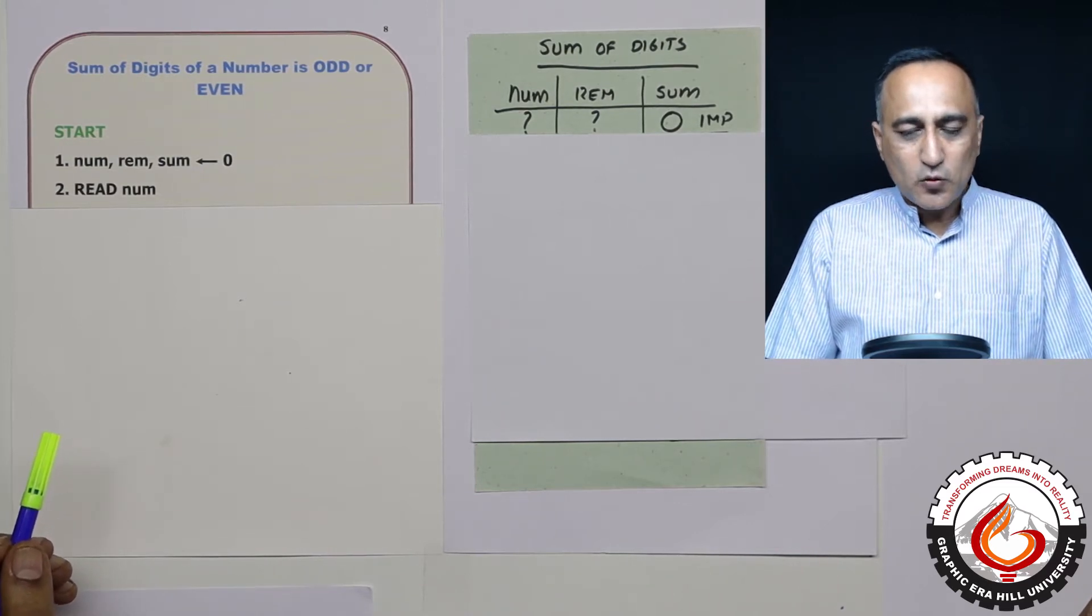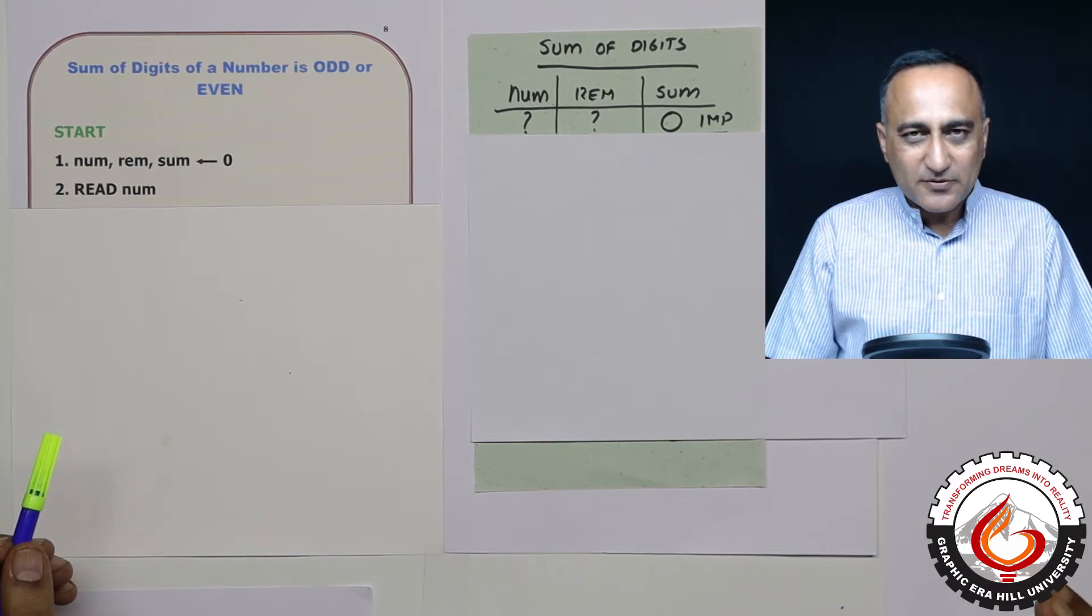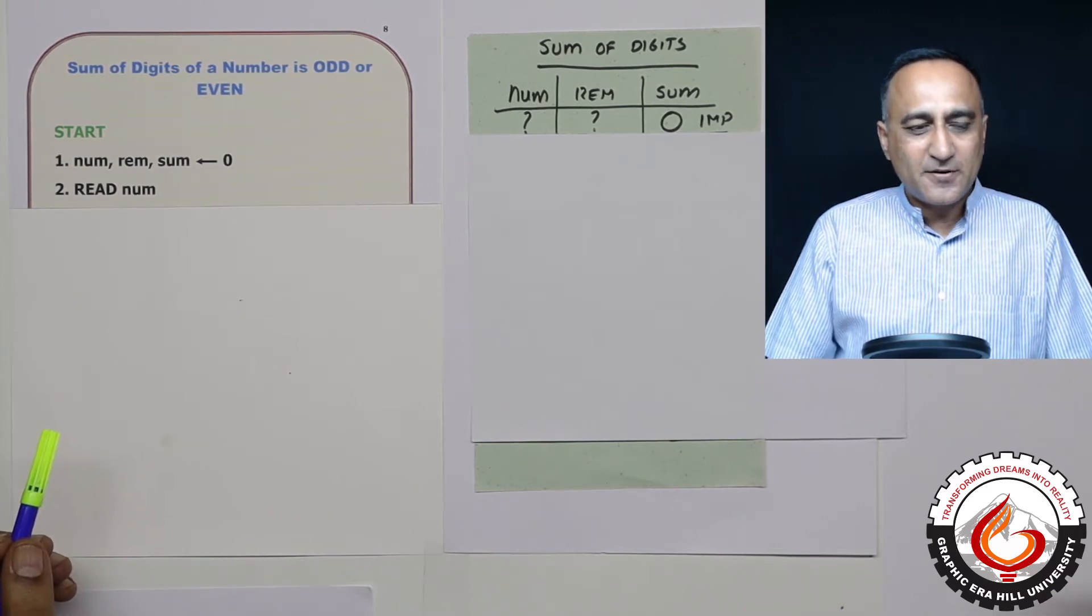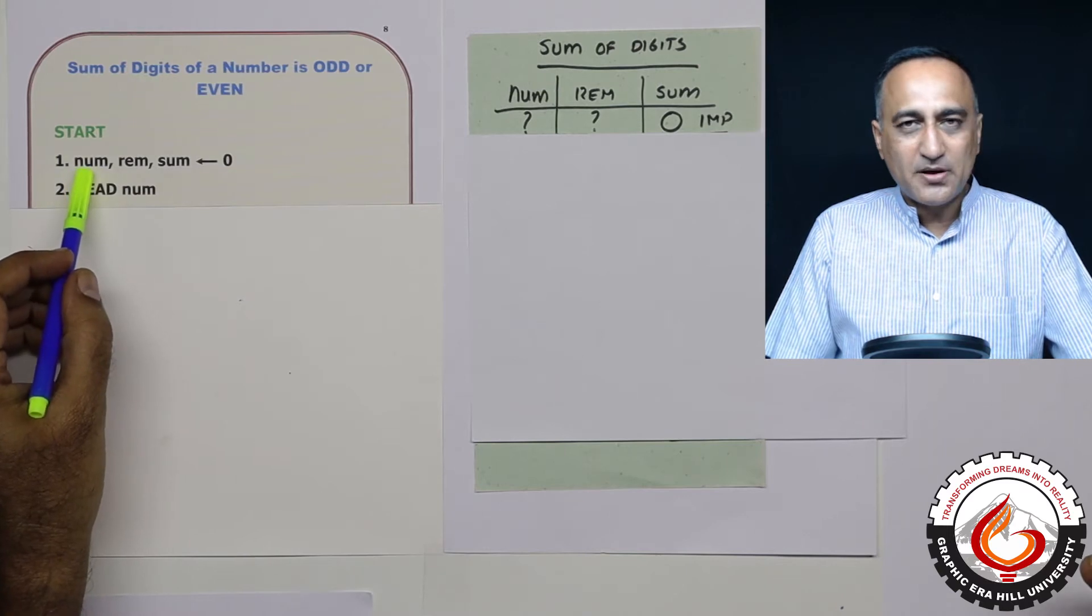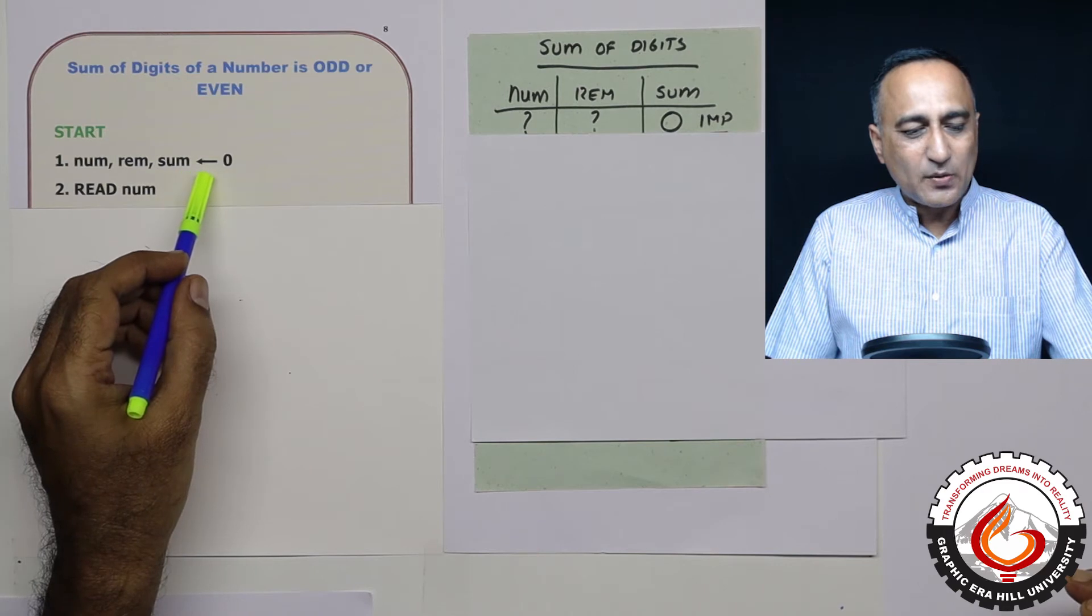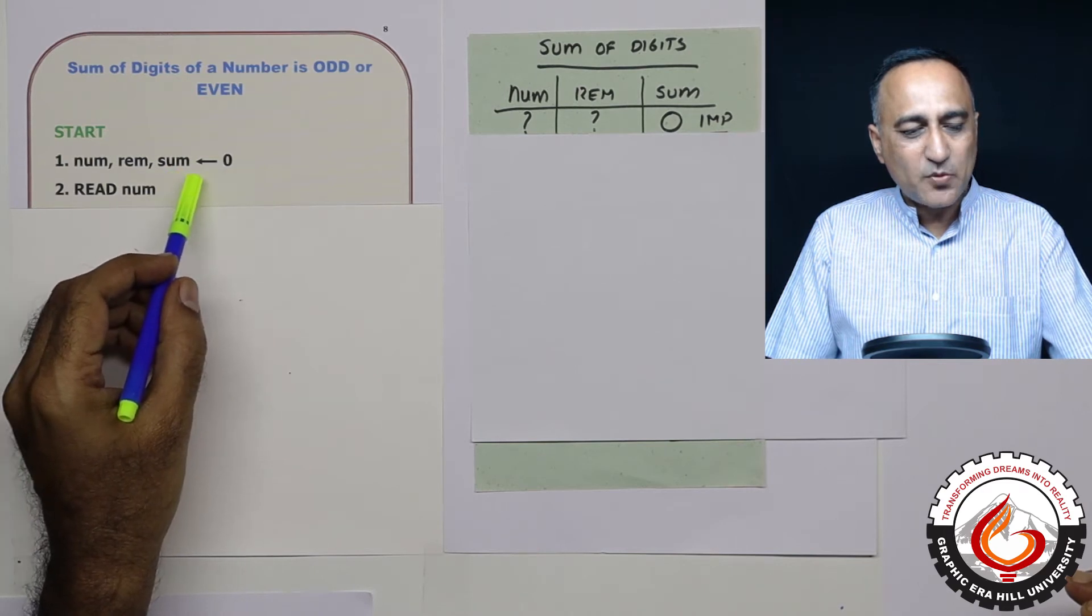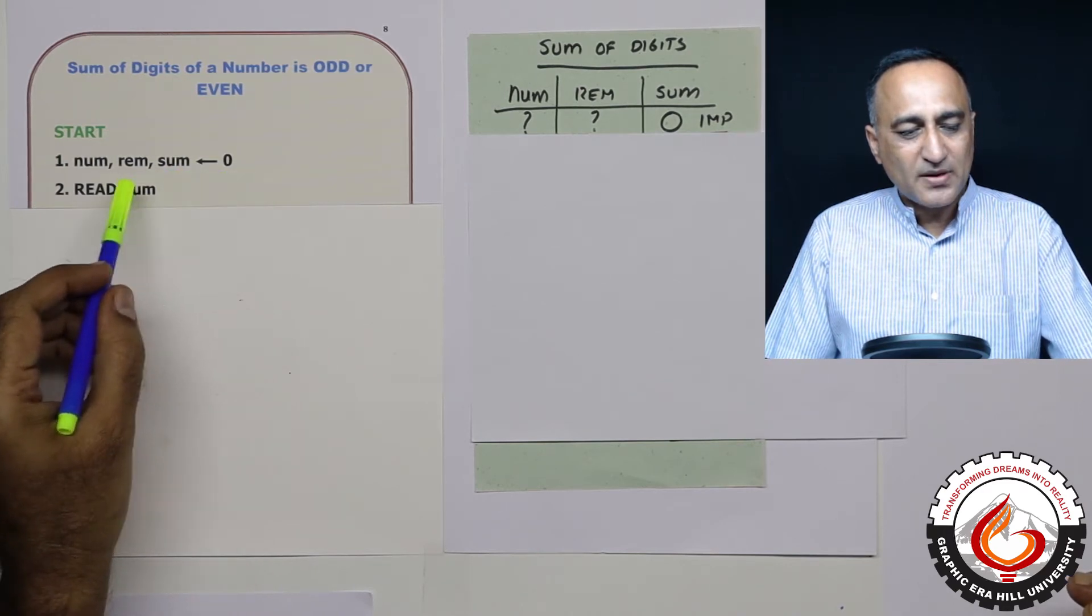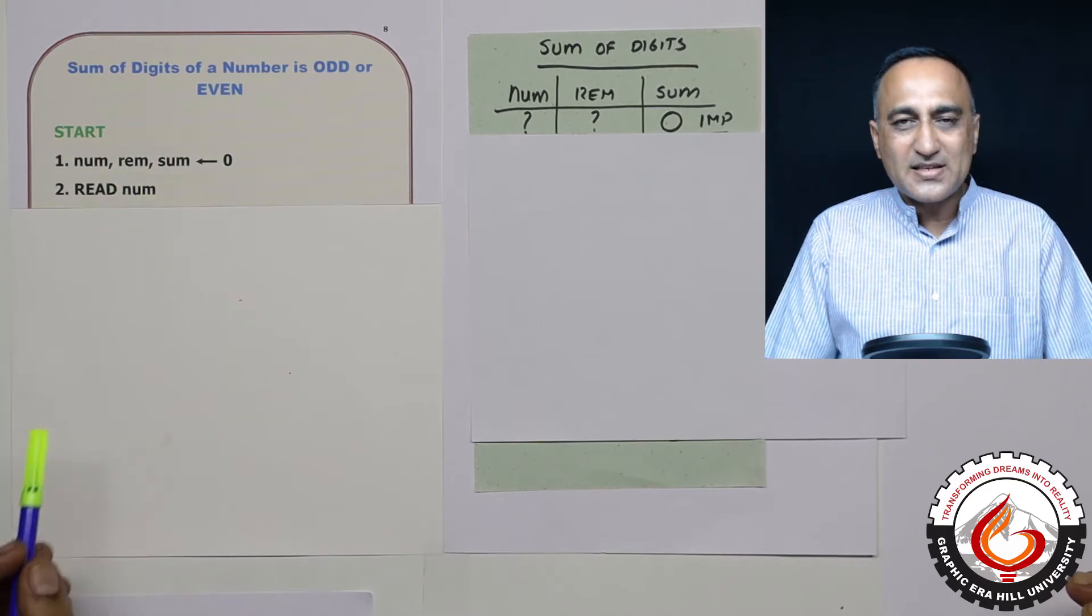In order to find out the sum of the digits of a number, the first variable I'll need is a variable called number to read the number. Then in order to store the sum, I'll require a variable called sum with the initial value zero.